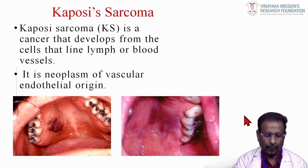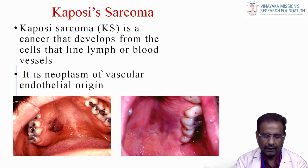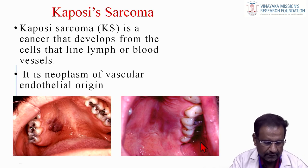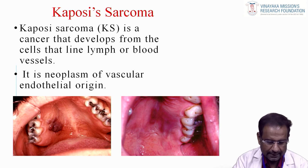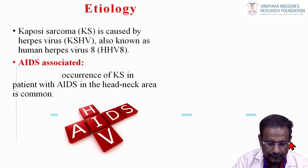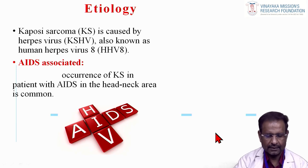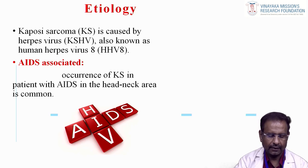Kaposi's sarcoma is a cancer that develops from cells lining lymph or blood vessels — it is a neoplasm of vascular endothelial origin. The common site is the palate. The etiology is herpesvirus, also known as human herpesvirus 8 (HHV-8). It is most commonly associated with HIV patients and is very common in the head and neck area.